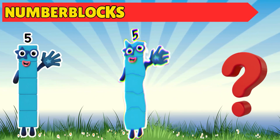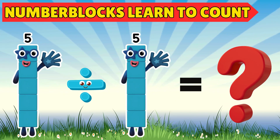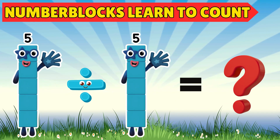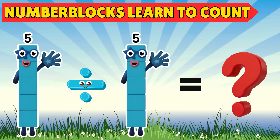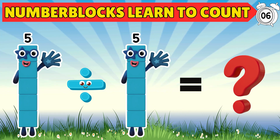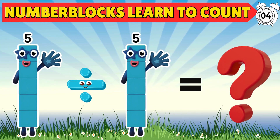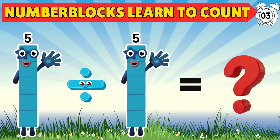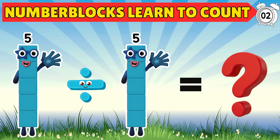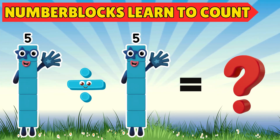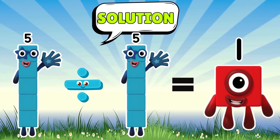Can the Number Blocks solve this division puzzle? Five divided by five equals — solved! Five divided by five equals one. Let's keep learning with the Number Blocks.